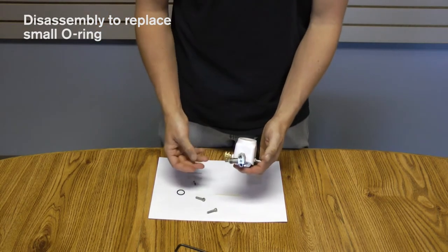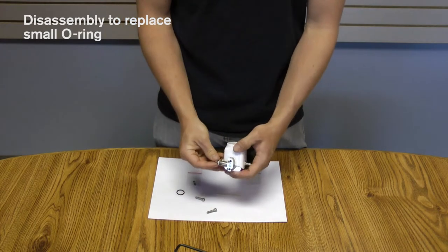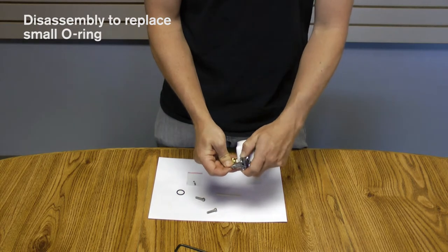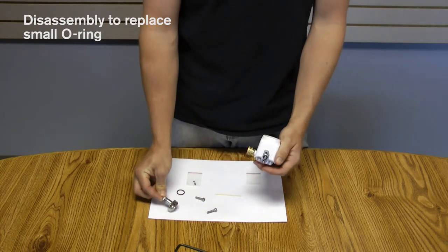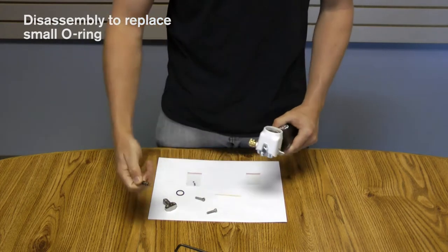Now in order to get the housing off, you can either just pull or what I like to do just to make it easy is pull on the trigger there so it allows you to take that housing off. And then you can take the valve stem out.